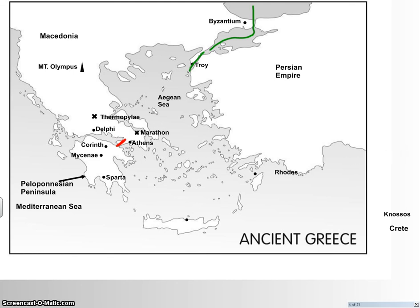You have the island of Rhodes, and then Crete — the island of Crete — which is our first destination once we're done with the map, along with its great palace city of Knossos. Make sure you've got this written down; stop the video if you need to and make sure you've got the map filled in correctly. I will be checking it in class.